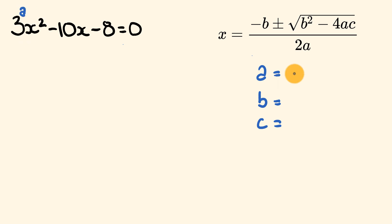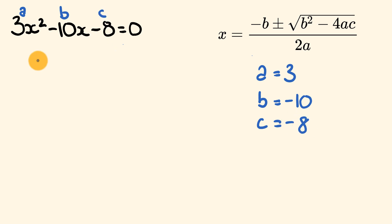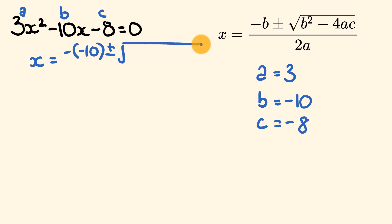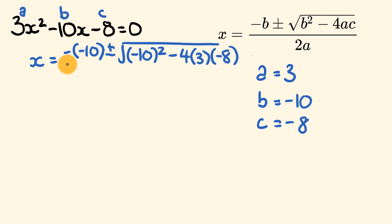The value of a in front of x squared is 3. Then we have the value of b — now we don't just take the 10, we take the entire negative 10, so be careful of that. And we have c equal to negative 8. So let's put this all into the quadratic formula: x is equal to negative b, so negative negative 10, plus or minus the square root of b squared — negative 10 squared — minus 4ac, so 4 times 3 times negative 8. And all of this goes over 2a, so 2 times 3.